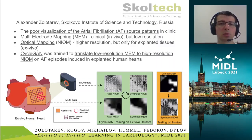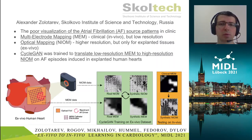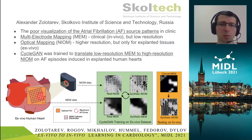A CycleGAN model was trained to translate low-resolution electrode maps to high-resolution optical maps on the ex vivo dataset. This formed our training and testing sets. We then used real clinical cases from Ohio State University, and the model generated high-resolution optical maps from low-resolution electrode maps.